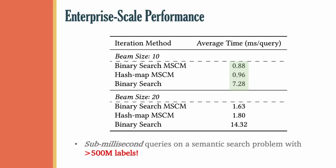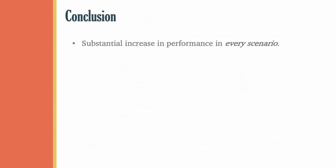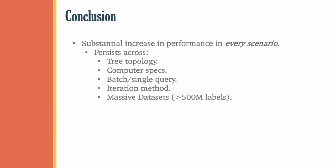With that, I would like to finish by pointing out that masked sparse chunk multiplication, or MSCM as we refer to it in the paper, gives a substantial performance boost in essentially every single scenario. This performance boost is consistent across tree topology, computer specifications, batch and real-time single query settings, sparse iteration methods, and even to massive data sets with over 500 million labels. Moreover, there is no compromise to accuracy, and the implementation is relatively simple.